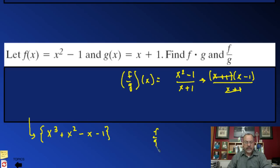So f divided by g of x would simplify to x minus 1.